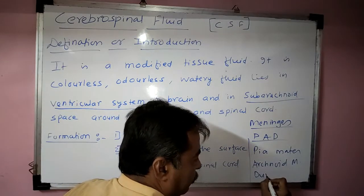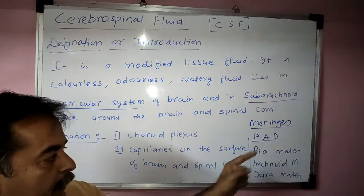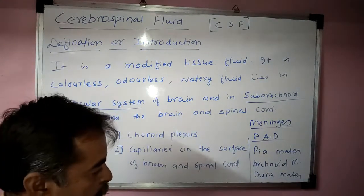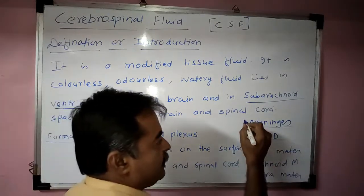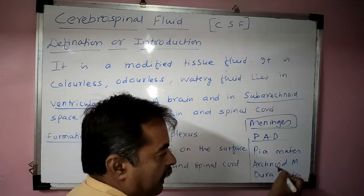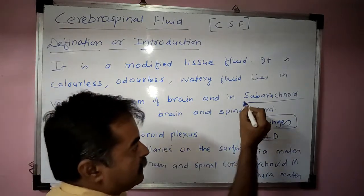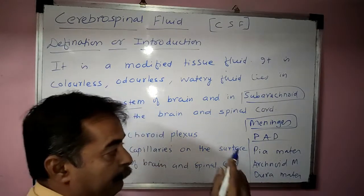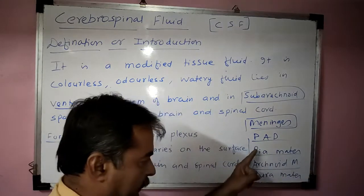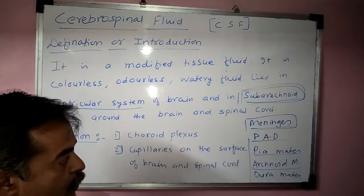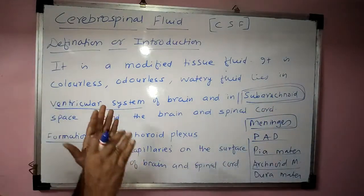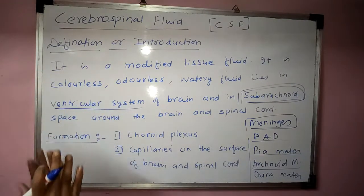D for dura mater. So from inner to outer: pia mater is the innermost layer, then arachnoid mater, then dura mater. The subarachnoid space lies below the arachnoid mater — it is the space between the pia mater and the arachnoid mater, lying around the brain and spinal cord.